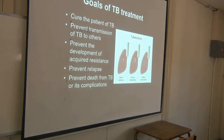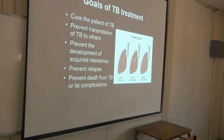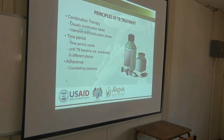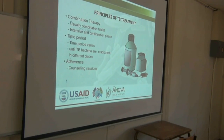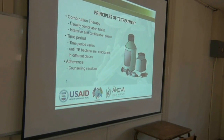The goals of TB treatment are: to cure the patient, decrease transmission, prevent the development of resistance, prevent relapse, and prevent death and TB complications. The principles involve combination treatment, with an intensive and a continuation phase. The time period varies depending on the type of TB being treated, and adherence is very important. The main difference from HIV treatment is that for ARVs you treat for life, whereas for TB you actually stop taking medication after a while.